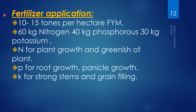For fertilizer application, SRI requires mostly organic manures — 10 to 15 tons per hectare of Farm Yard Manure (FYM), applied 3 to 4 weeks before sowing. Chemical fertilizers include 60 kg nitrogen, 40 kg phosphorus, and 30 kg potassium. Phosphorus and potassium are applied at basal dose since they require longer time to be absorbed. The remaining 30% of nitrogen is applied after first weeding. N is for plant growth and greenness, P for root and panicle growth, and K for strong stems and grain filling.